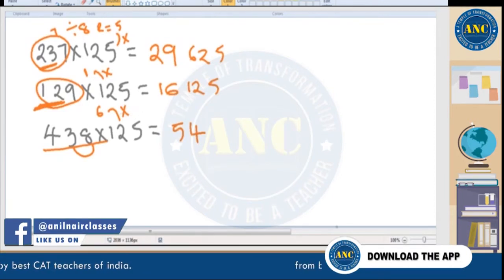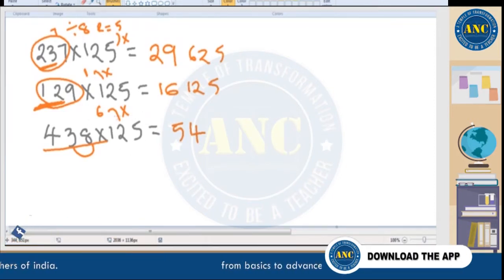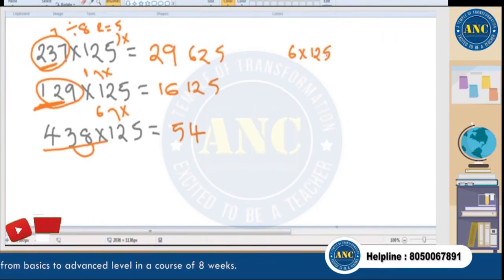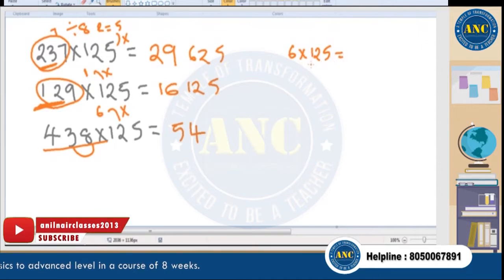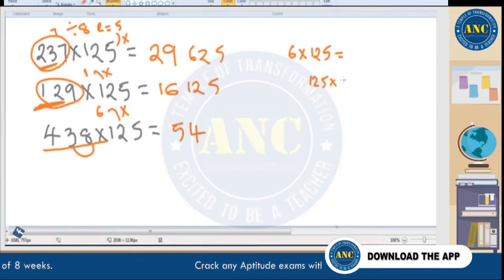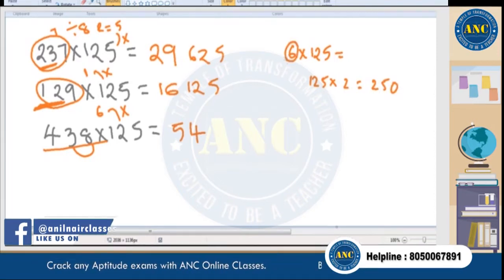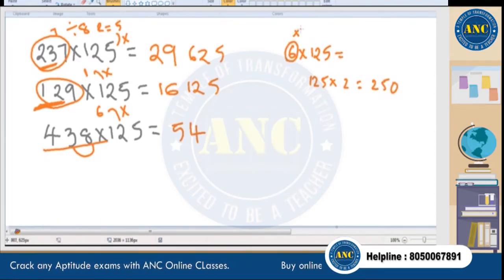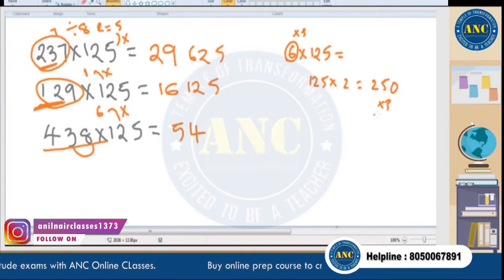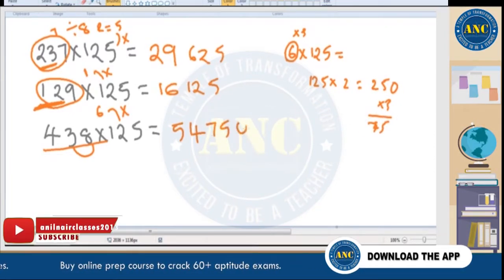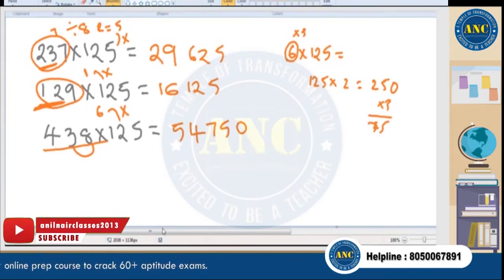For 438 × 125: divide 438 by 8 — 8 fours are 32, remainder 6. Now 6 × 125 = 3 × 250 = 750. Quotient is 54, so the answer is 54,750.